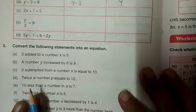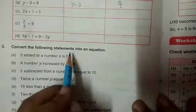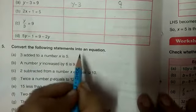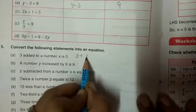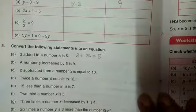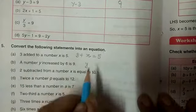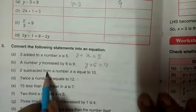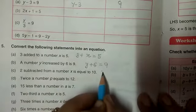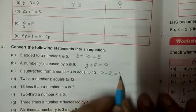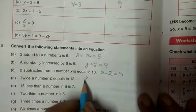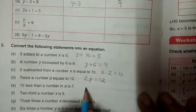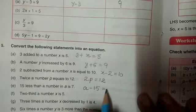Now, I am explaining question number 5. Convert these statements into an equation. 3 added to a number x. 3 added means plus number x equals 5. A number y increased by 6 plus 6 is equal to 9. 2 subtracted from a number x, x minus 2 equals 10. Then, twice a number p, that is 2p equals 12.